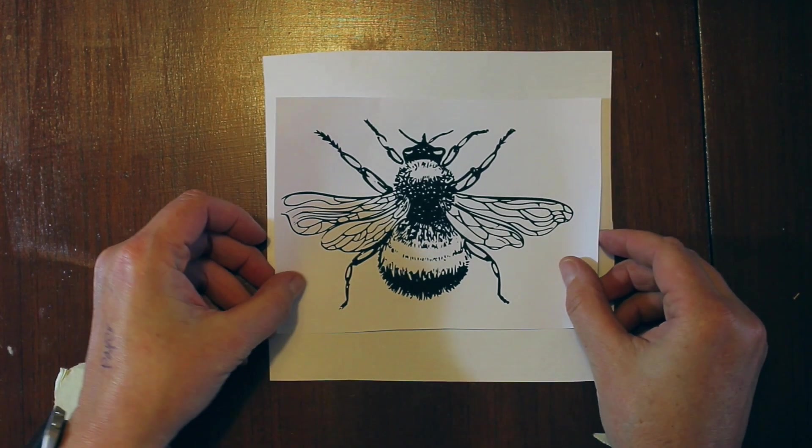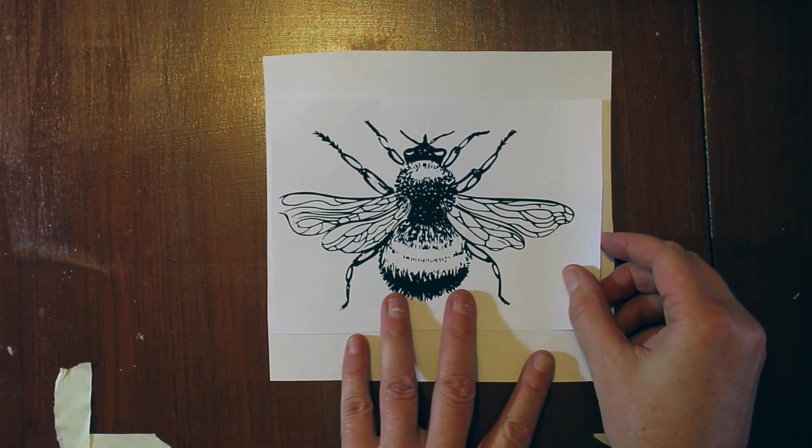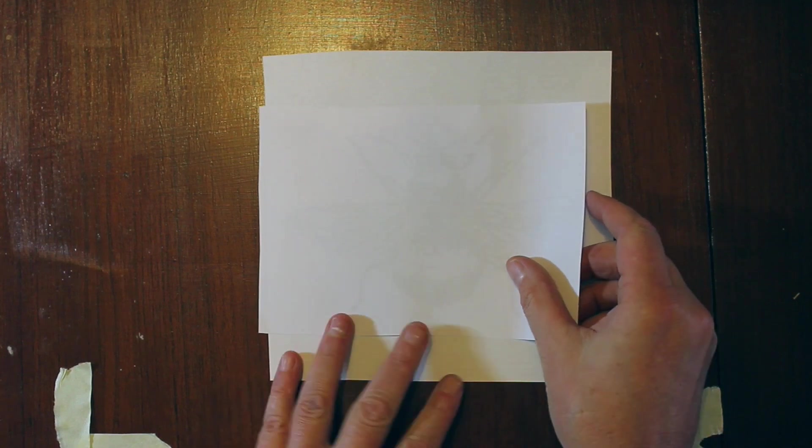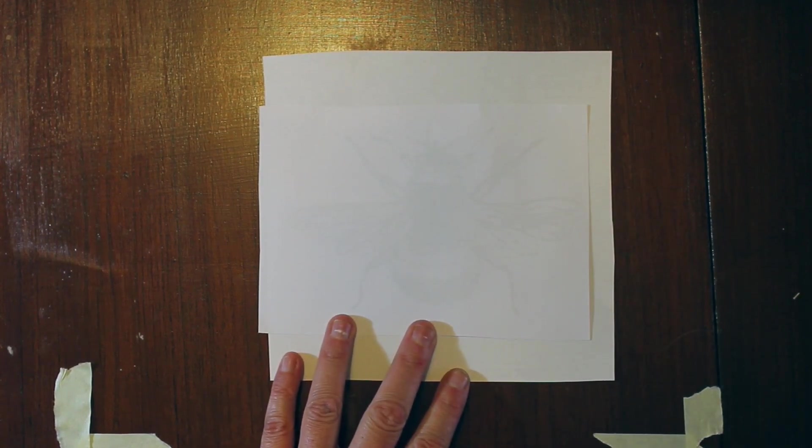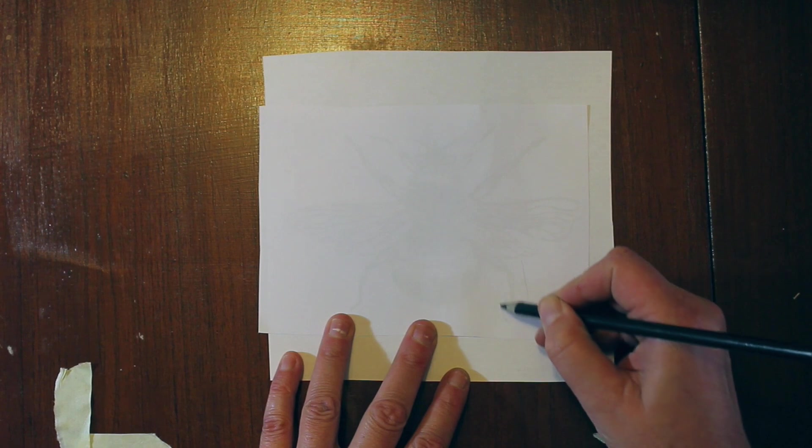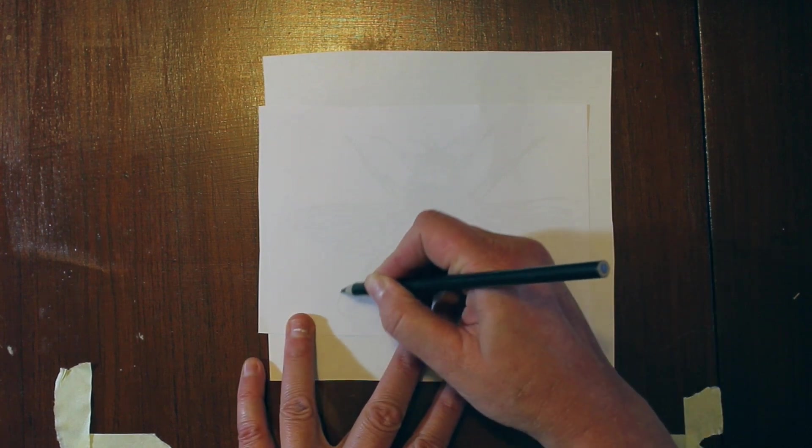Hi, so today we're going to be making an oil pastel print of a bee. I've started out with a photocopy—you can start out with an original drawing—and we're going to turn that over and place it on top of another white sheet of paper. You should be able to see your drawing through it. If you can't, you can always go to a window and do it that way.